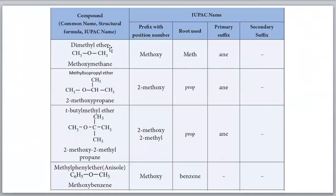For common names: 'alkyl ether' is the format. If two same alkyl groups are present, say 'dialkyl ether'; if different, say 'alkyl alkyl ether'. The alkyl groups are arranged alphabetically, ignoring prefixes like iso, neo, or tertiary. For example, dimethyl ether has two methyl groups. Methyl isopropyl ether: compare 'methyl' (m) and 'propyl' (p) - m comes first, so methyl isopropyl ether.